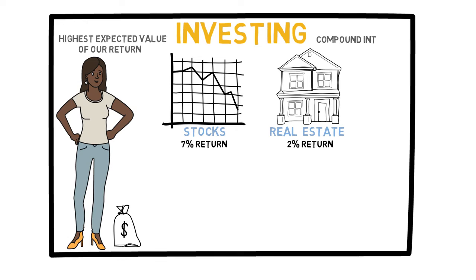This is a huge difference because over time the power of compound interest takes hold. Of course no one can guarantee that future returns will be similar to the past, but in the absence of any other information that might not be a bad assumption. So the answer to our original question may now seem obvious — you would pick stocks — but we need to dig a little deeper than that.